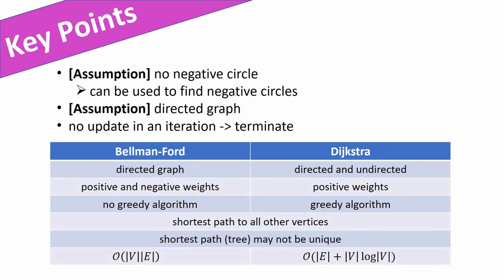Here is a table comparing the Bellman-Ford algorithm with Dijkstra's algorithm. The Bellman-Ford algorithm supports positive and negative edge weights, as long as there is no negative circle. Dijkstra's algorithm only works for positive weights. The Bellman-Ford algorithm is slower than Dijkstra's, which is not surprising since it handles negative edge weights — but this comes at the cost of a somewhat larger computation time. That's all for the Bellman-Ford algorithm. Thank you very much for watching.